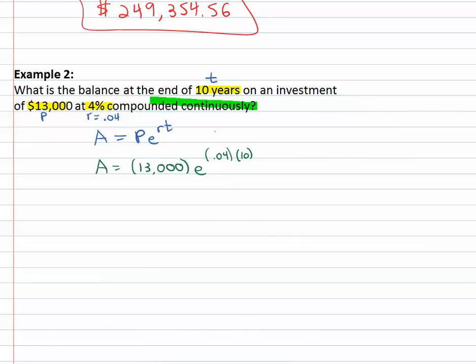And again it's important as we type it into the calculator that whole exponent's in the parenthesis. Thirteen thousand dollars times e to the .04 times ten comes out to nineteen thousand dollars, three hundred ninety-three and seventy-two cents.